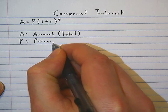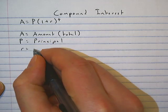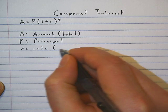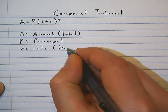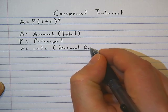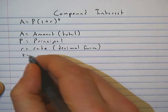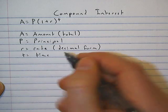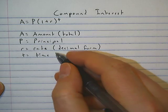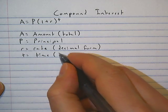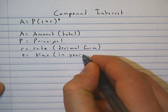P is equal to principal, r is equal to rate which needs to be in decimal form, and t is time—also called the term. Time and term are interchangeable here, but it's measured in years.